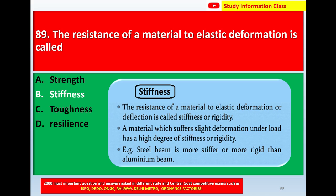Stiffness is defined as the resistance of a material to elastic deformation or deflection. A material which suffers slight deformation under load has a high degree of stiffness or rigidity. For example, a steel beam is stiffer or more rigid than an aluminium beam. Answer: option B: stiffness.